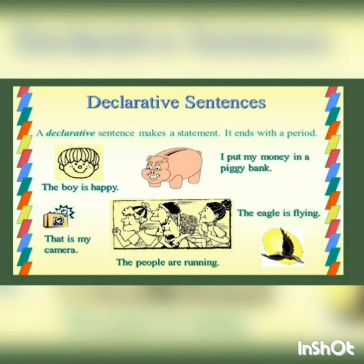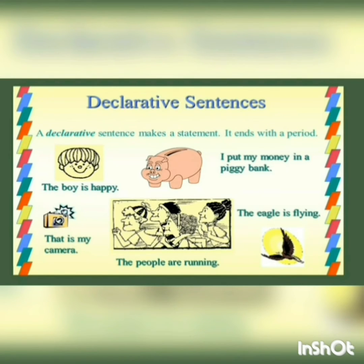A declarative sentence is also called an assertive sentence. It makes a statement and ends with a period — that means a full stop. They tell us something, give us information, and they normally end with a full stop. Declarative sentences can be positive or negative. Examples: 'The boy is happy.' 'I put my money in a piggy bank.' 'This is my camera.' 'The eagle is flying.' 'The people are running.'